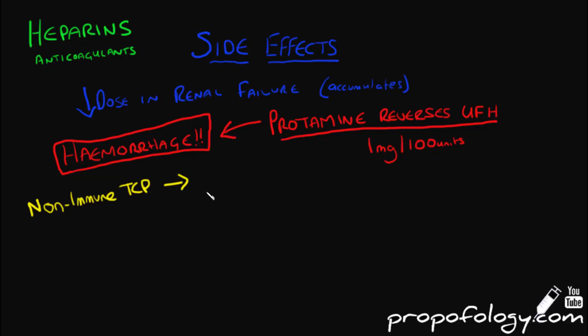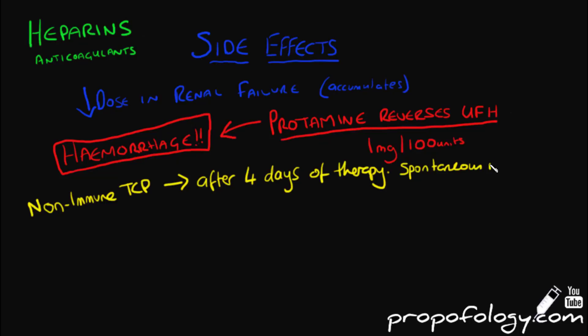Non-immune thrombocytopenia is a common occurrence and is self-limiting. It normally occurs after four days of therapy, with spontaneous recovery seen even if the unfractionated heparin is not stopped.